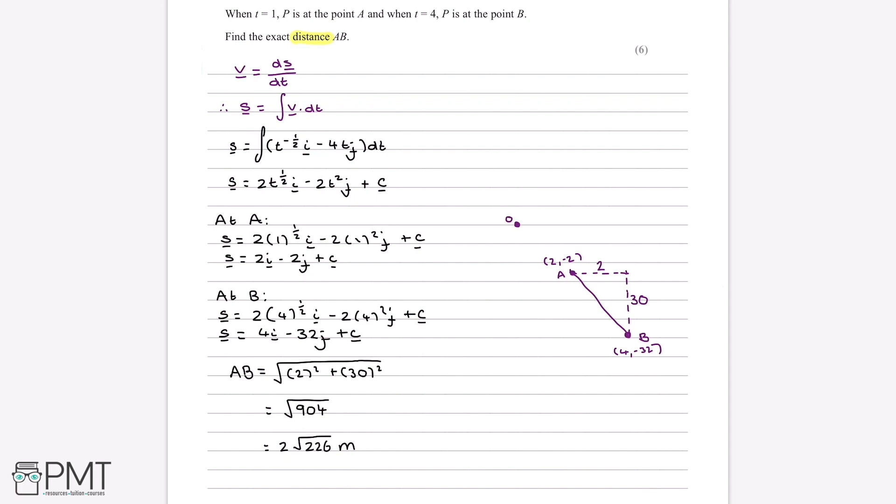So this question is worth six marks. And our first mark comes from integrating the velocity with respect to time. So this gets us a method mark. And then we get a further answer mark for doing it correctly and finding that the displacement is 2t to the power of a half i minus 2t squared j plus c. We get another method mark for substituting t equals 4 and t equals 1 respectively. So for doing this and for doing this gets us one mark for both of them. And then this gets another answer mark for doing it correctly. So finding these two formulas gets us another one mark as an answer mark. And now we get another method mark for then using Pythagoras's theorem to find the distance AB. So doing this calculation gets us a method mark. And then lastly, we get an answer mark for finding that the distance AB is equal to 2 root 226 meters.